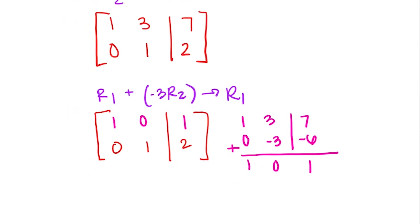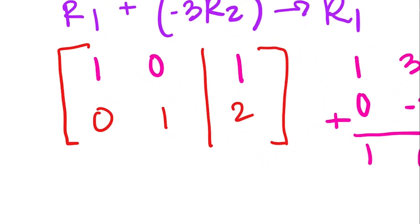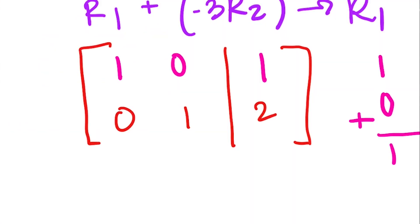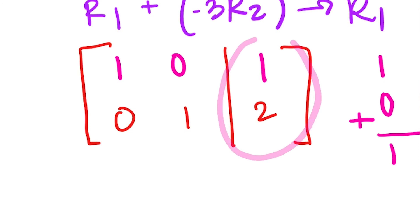And we're pretty much done. This right here is reduced row echelon form. The left hand side is the identity matrix, which means right over here is our solution to the system. That is telling us that x equals 1 and y equals 2. Because if we were to write the equation that results from this row, what this is saying is 1 times x plus 0 times y equals 1. And that's just x equals 1. This row is saying 0 times x plus 1 times y equals 2. So y equals 2.